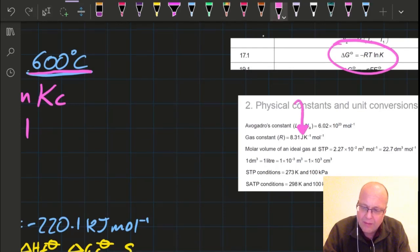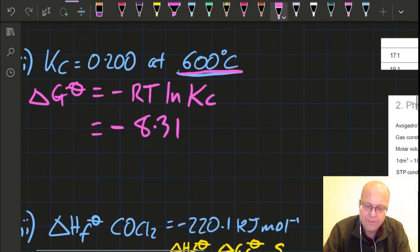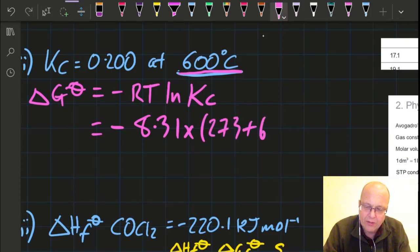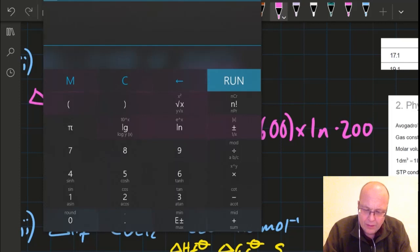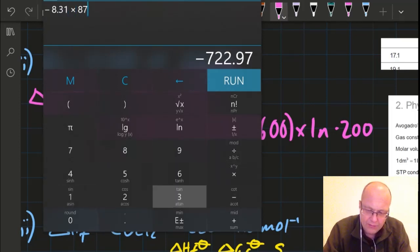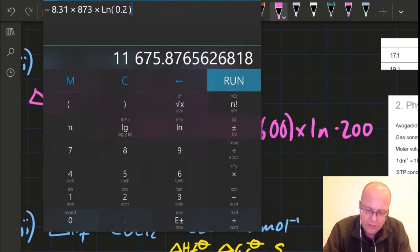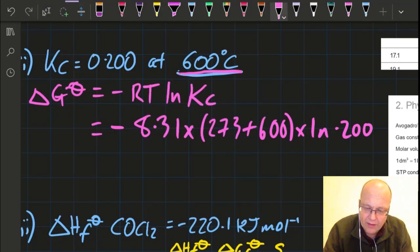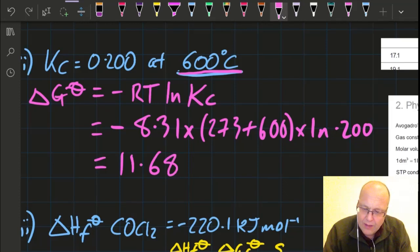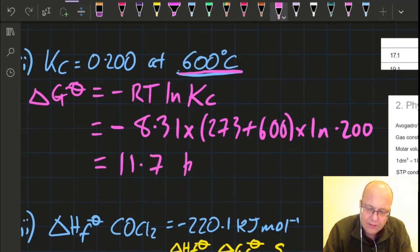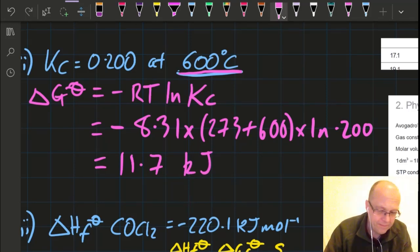I've got to remember to fix that up at the end because the question wants kilojoules. The temperature is 273 plus 600 because we need Kelvin, multiplied by the natural log of 0.200, which was given in the question. So -8.31 multiplied by 873 multiplied by the natural log of 0.2. That's with the joules, and I want kilojoules, so I'm going to divide by 1000 in my head. So that's going to be 11.68, and I think we need three sig figs. That's going to be 11.7, and that's kilojoules.